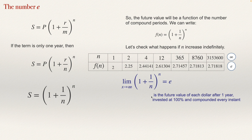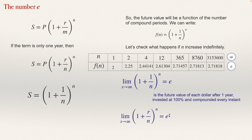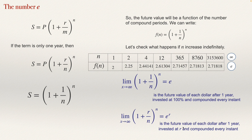We can prove that if the compound interest rate is different from 100% — if the rate is r — then the formula changes to e to the power r. So if r is 20%, that's e to the power 0.20. If the compound interest is 5%, the future value of one dollar will be e to the power 0.05. So e to the power r is the future value of each dollar after one year invested at rate r and compounded infinitely many times.